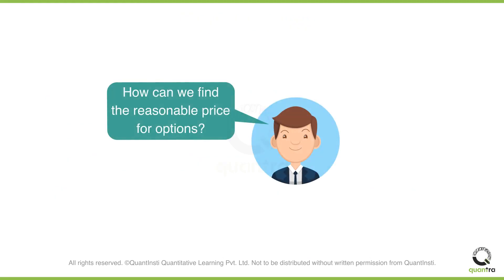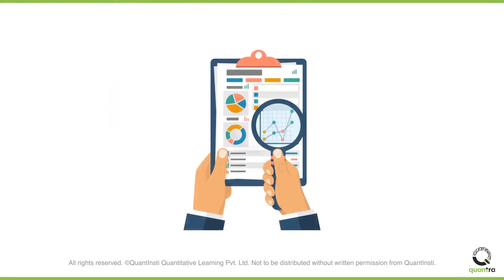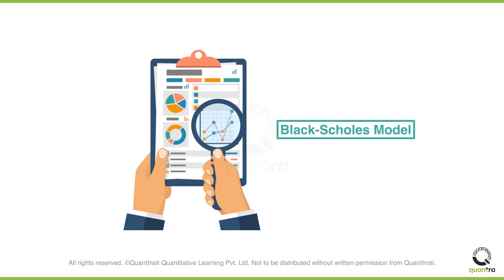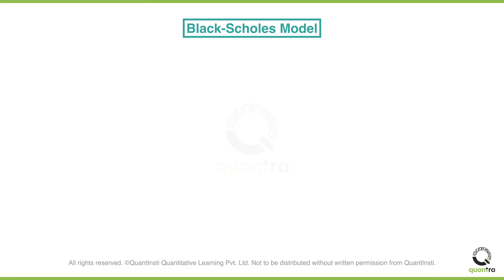When it comes to trading options, a reasonable price for each option is something that most traders look for. To get an idea of the reasonable price, researchers have introduced various models, among which the Black-Scholes model is the most widely used. However, the Black-Scholes model works around certain assumptions.